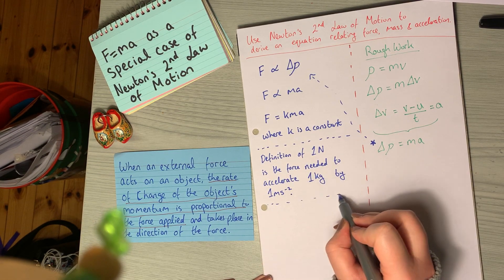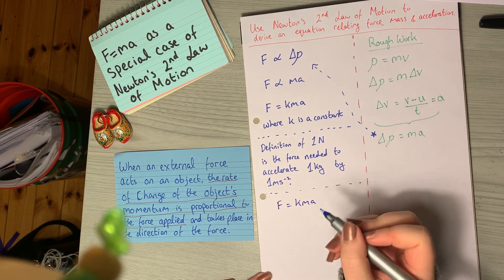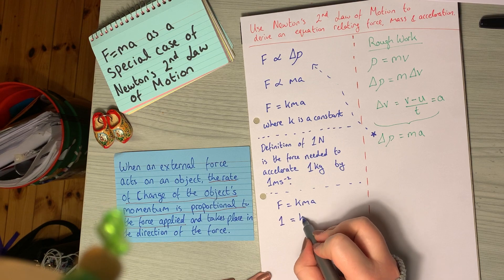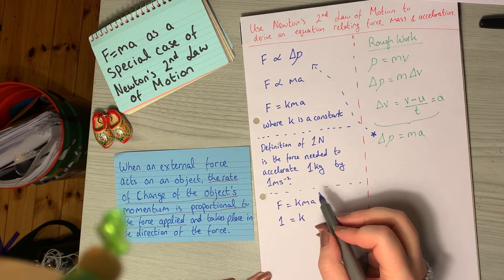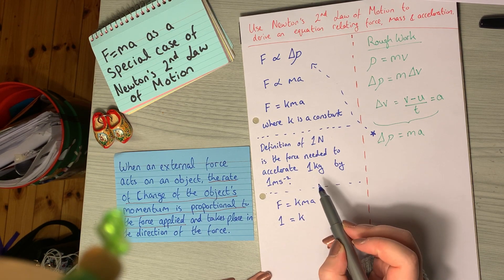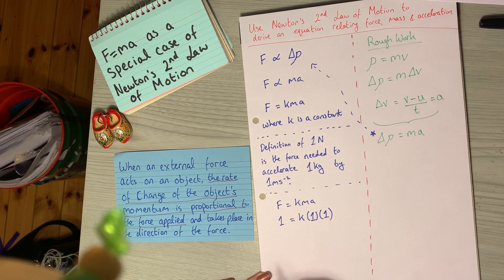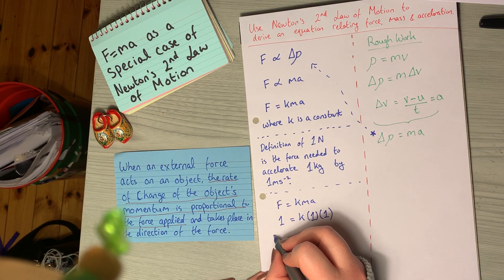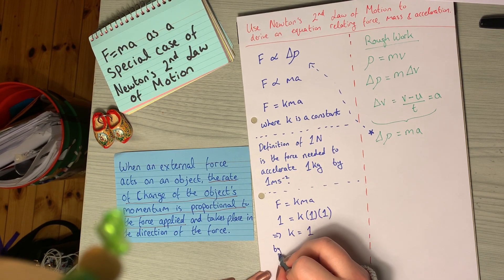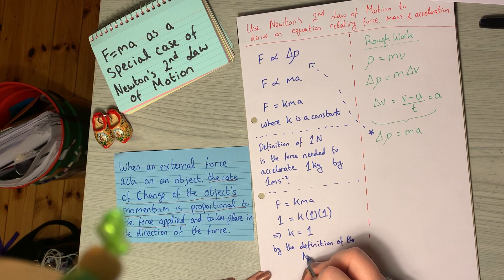If we have a look at our formula here, we have F equals KMA. So one Newton, we'll just sub in one for F, has to be equal to the constant that we're looking to find out. It has to be equal to a mass of one kilogram times an acceleration of one by the definition of a Newton. So that means it's K multiplied by one. This is telling us that K, our constant, must be equal to one by the definition of the Newton.